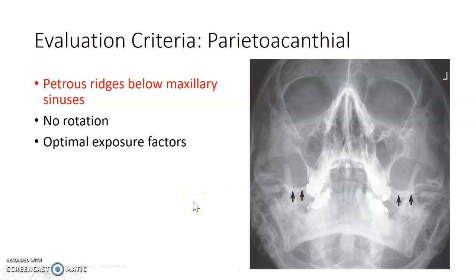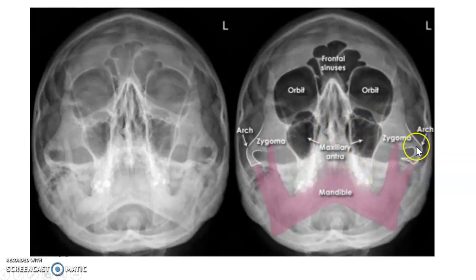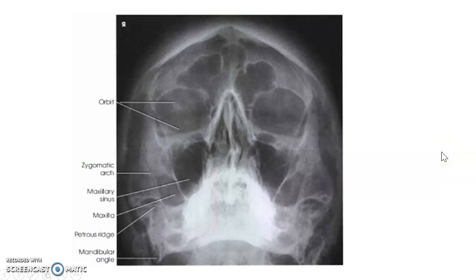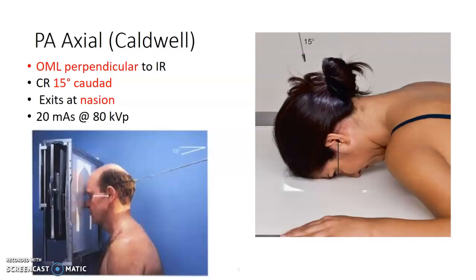This is a nice visual identifying where your zygoma is, where your maxillary sinuses are, and where the arches are relative to the mandible. There are additional anatomy pictures here — make sure you go through your anatomy. For the Caldwell, it's pretty much the same as for the skull: OML perpendicular to the IR.